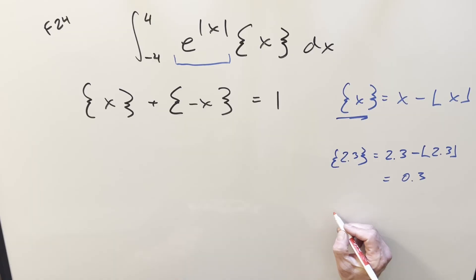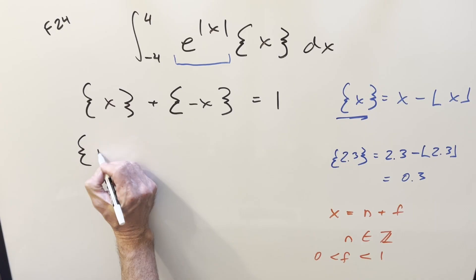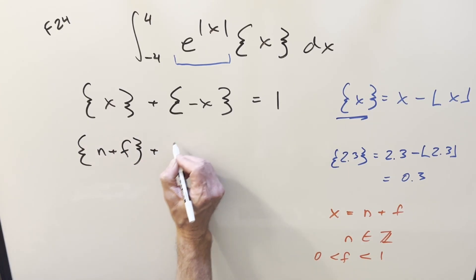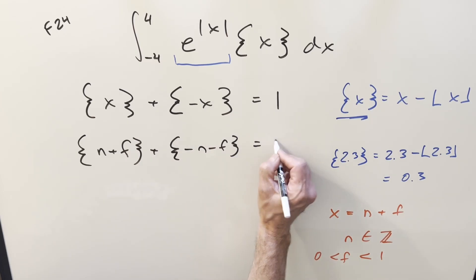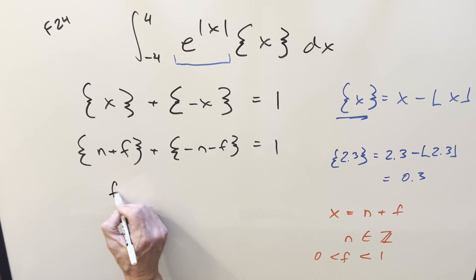What we can do is set x equal to n plus f, where n is a member of the integers. We'll define f, some fractional part, as a value between 0 and 1, not equal to 0 or 1. We take that definition and plug it in. This becomes n plus f plus fractional part of minus n minus f. This right here is just going to be f based on the definition of the fractional part. That just returns the fractional part and leaves the integer value. So this just becomes f.